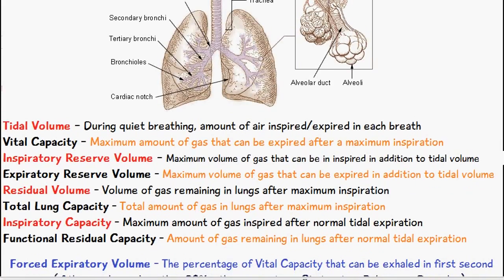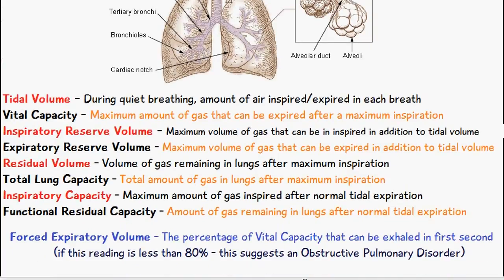The last thing I want to mention is forced expiratory volume. You may have done this if you've ever gone to the hospital and had to breathe really fast into one of those tubes — it's known as a spirometer. Basically it measures the percentage of vital capacity that can be exhaled in the first second. The spirometer measures how forcefully you can breathe that first bit of air out. If this reading is less than 80%, this suggests some form of obstructive pulmonary disorder. Forced expiratory volume is quite a common practice even day to day.